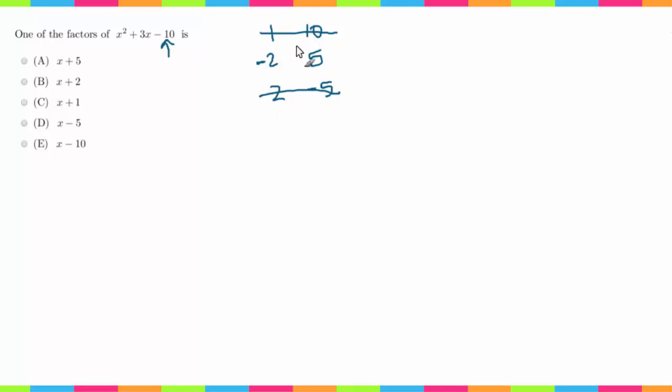Now all we have to do is put this into factored form. We're going to draw our parentheses and write x minus 2, then multiply that by x plus 5 since this was positive.